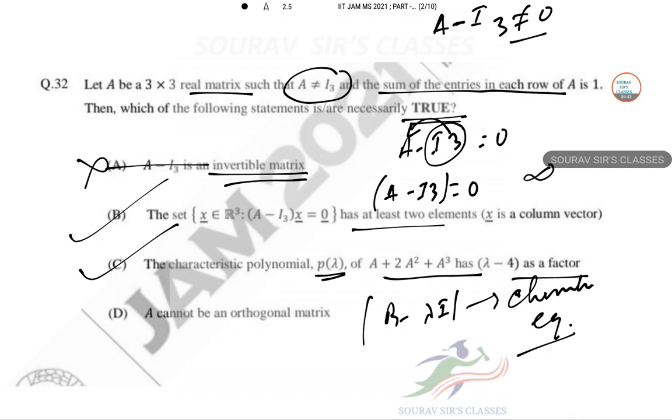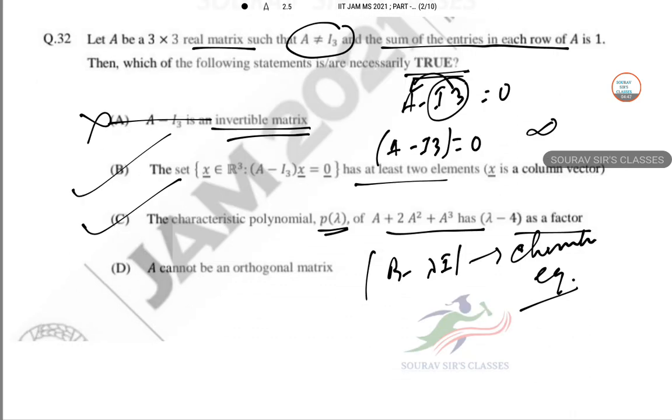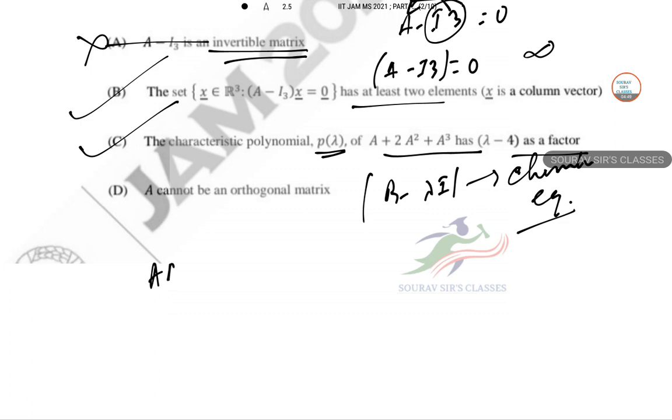A cannot be orthogonal matrix. For orthogonality, A into Aᵀ equals I, so Aᵀ equals A inverse. A must be an invertible matrix, but that is not guaranteed here. So this is also wrong. So B plus C is the answer.